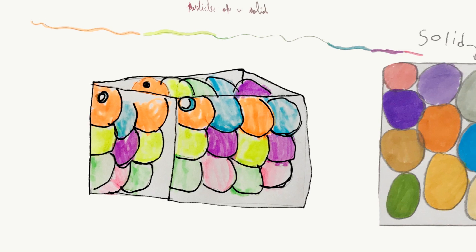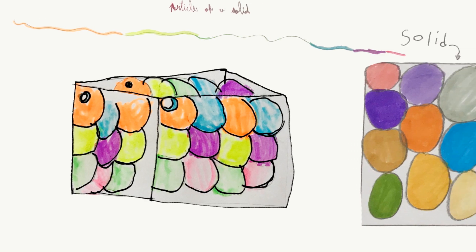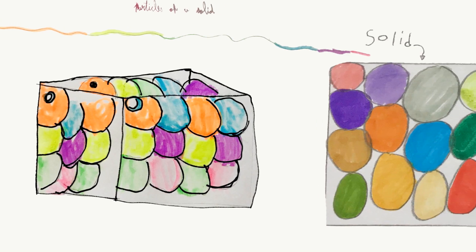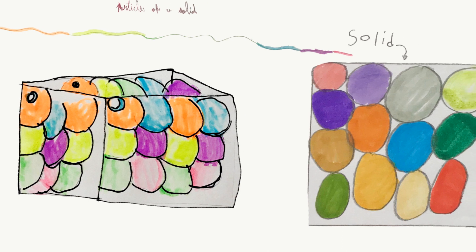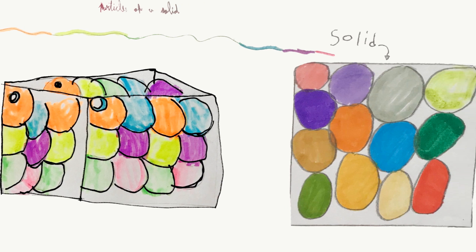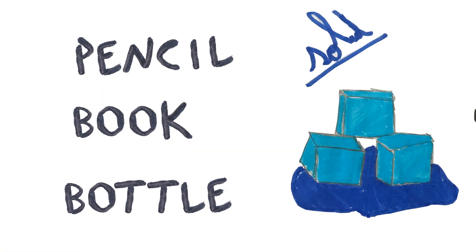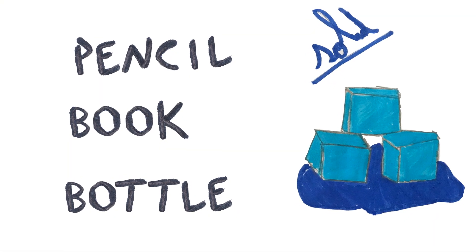In solids, we can find the particles very close together. They have a fixed shape. Examples: pencil, ice, book, bottle, etc.